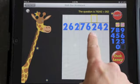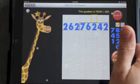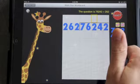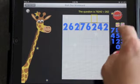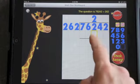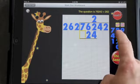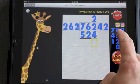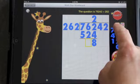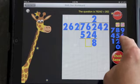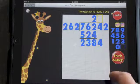262 into 762. I think that's 3 times or I think 3 times is too much. So let's go with 2. 4, 2, 5. Now we're going to subtract. So 8, 3, 2. Bring down the 4.